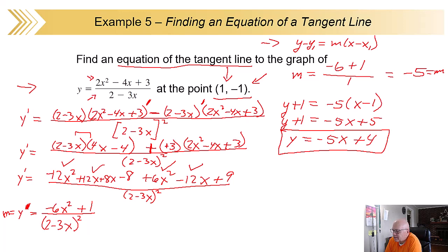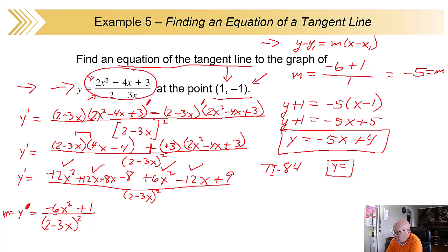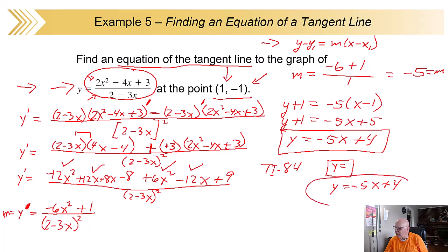Now here comes the fun part — grab your calculator, your TI-83 or 84. Graph this original equation by hitting the y-equals key and putting the function in, then hit graph. Go back to y-equals again and put in y equals minus 5x plus 4, which is our tangent line. Hit graph again, and you'll see the two will pair up very nicely — the line being the tangent to the first rational function. Pretty neat.